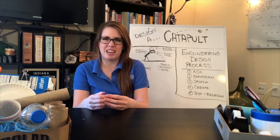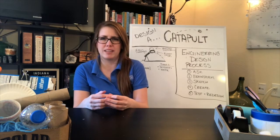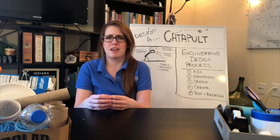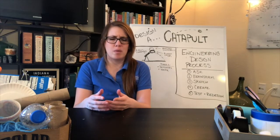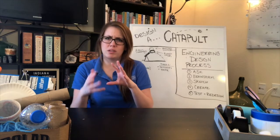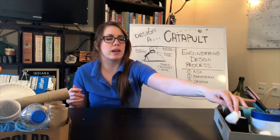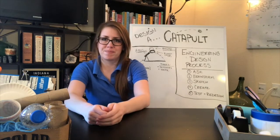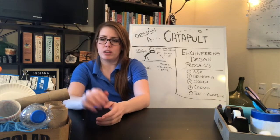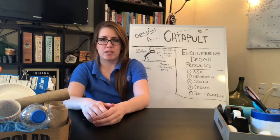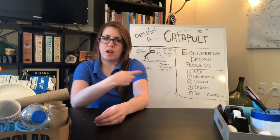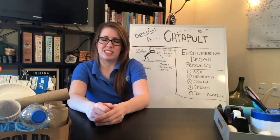Now a catapult is a kind of ancient weapon that was used to fling things like rocks at an enemy. And today we are going to build small-scale prototypes of that to be able to fling a lightweight object across the room. And to do that we are going to use everyday objects that we can find around our homes and we're going to follow the engineering design process as we build.